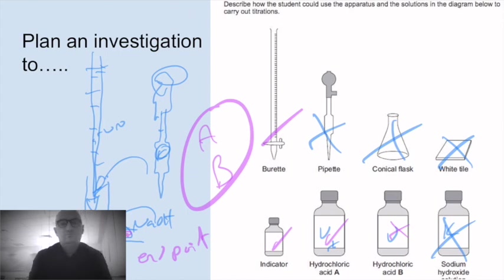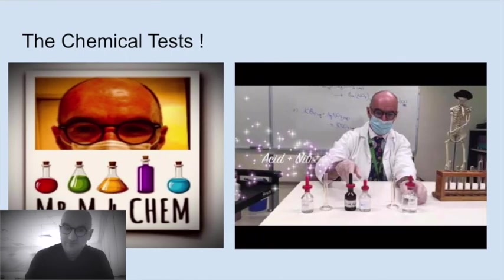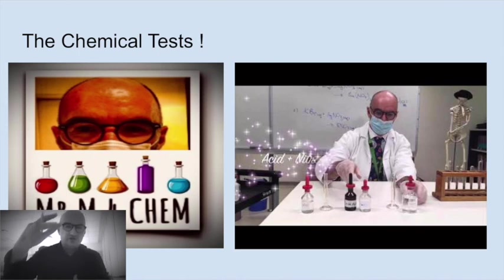The big problem with paper six is this, the chemical tests. Why is it such a problem? Because there are so many of them. There's just a full page of them. Some dissolve in excess, some don't. Some are green, some are blue, some are brown, some are red. It's just, oh, there's so much. What could we possibly do to learn the chemical tests? Well, you could do this.